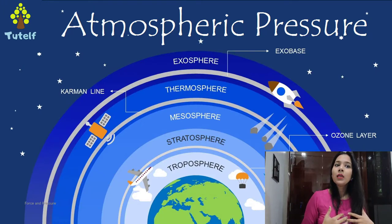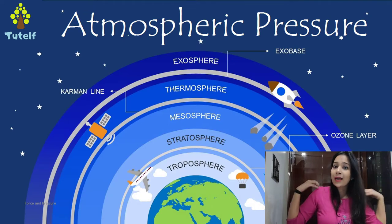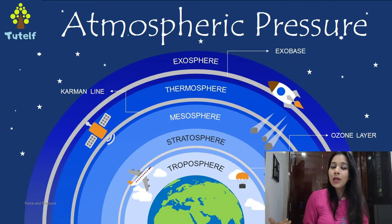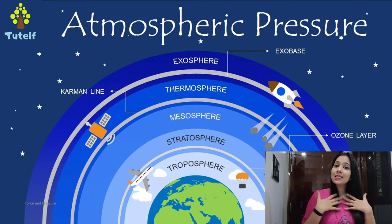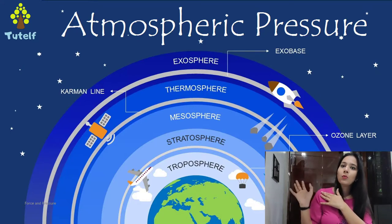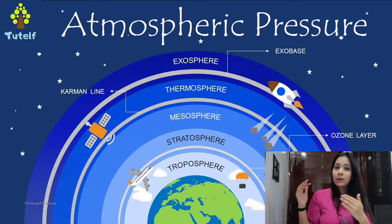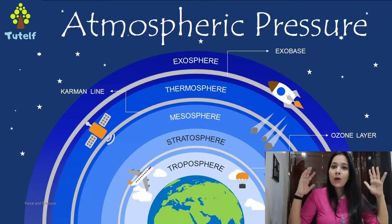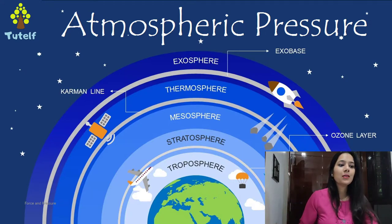Why do we not get compressed by all the atmospheric pressure exerting from all directions? It is because the atmospheric pressure inside us balances the atmospheric pressure coming from around us. That is the reason why we do not get compressed by the air column just above us.